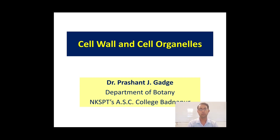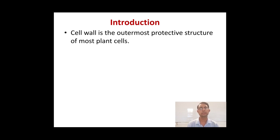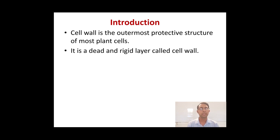Cell wall is the most important protective layer in living organisms. It is the external covering present to the cell, acting as a protective layer. The term cell wall is used for a protective structure not only in plants but also in bacteria, fungi, algae and other organisms. It is a dead and rigid layer, yet it acts as protection for the living organism.